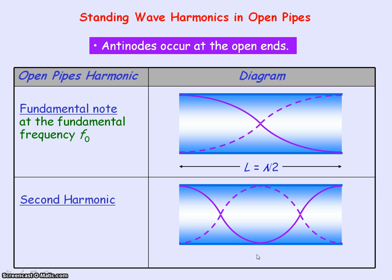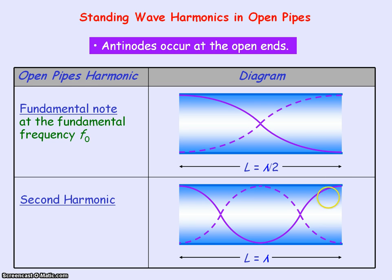This diagram is showing you the second harmonic standing wave. Again we have antinodes at the open ends, but we've now got an antinode at the centre of the pipe, and between the antinodes we have the nodes. So the length of the pipe now represents a full wavelength. Comparing with the first harmonic where the wavelength equals two times the length of the pipe, the wavelength for the second harmonic has been halved, so the frequency doubles. The standing wave for the second harmonic is vibrating at 2f₀.